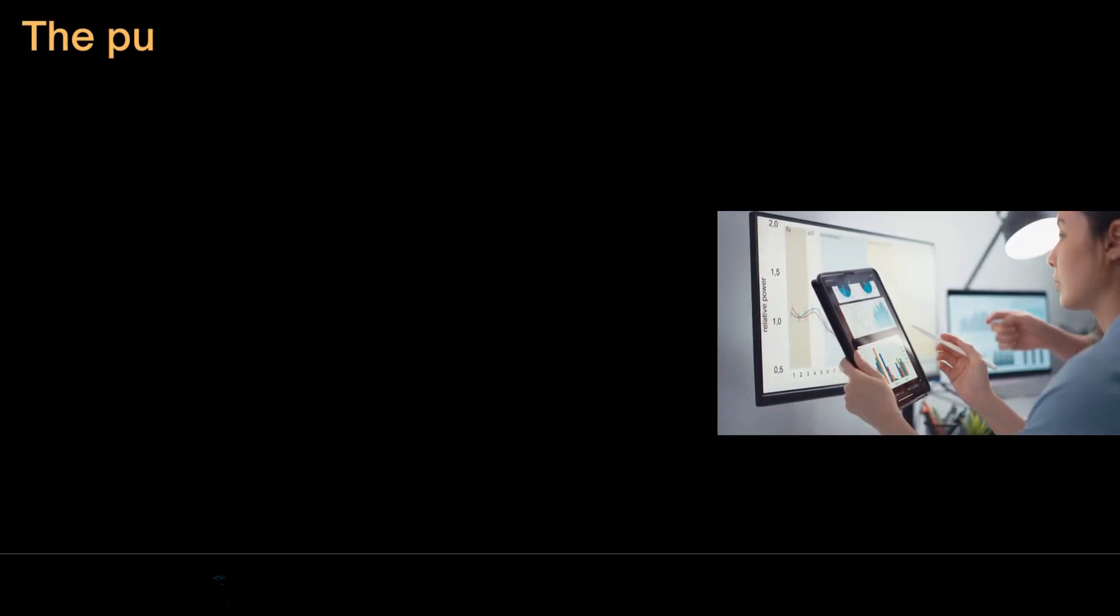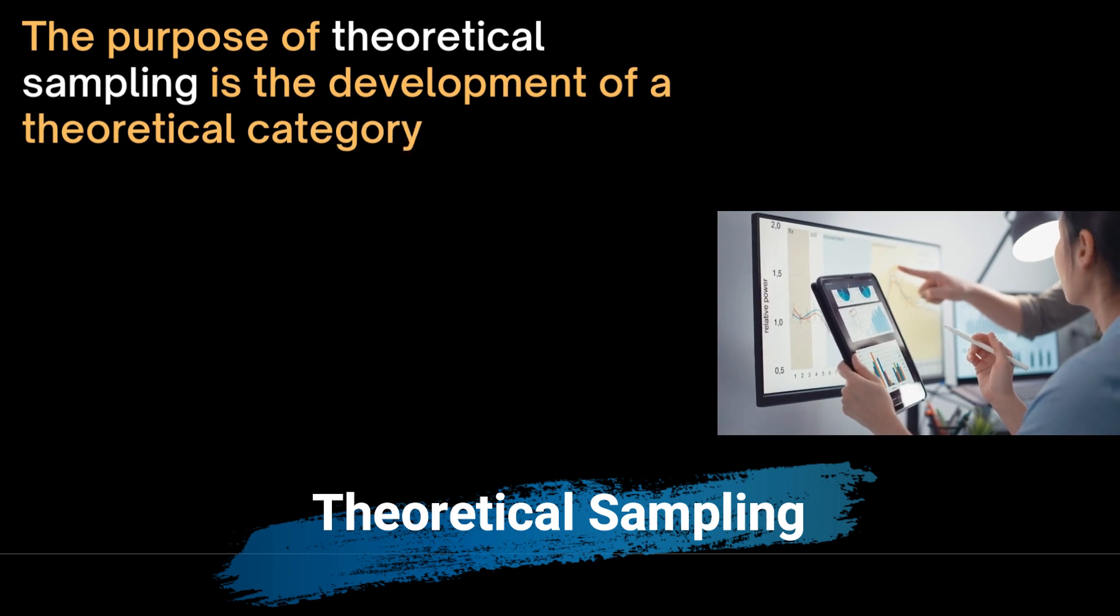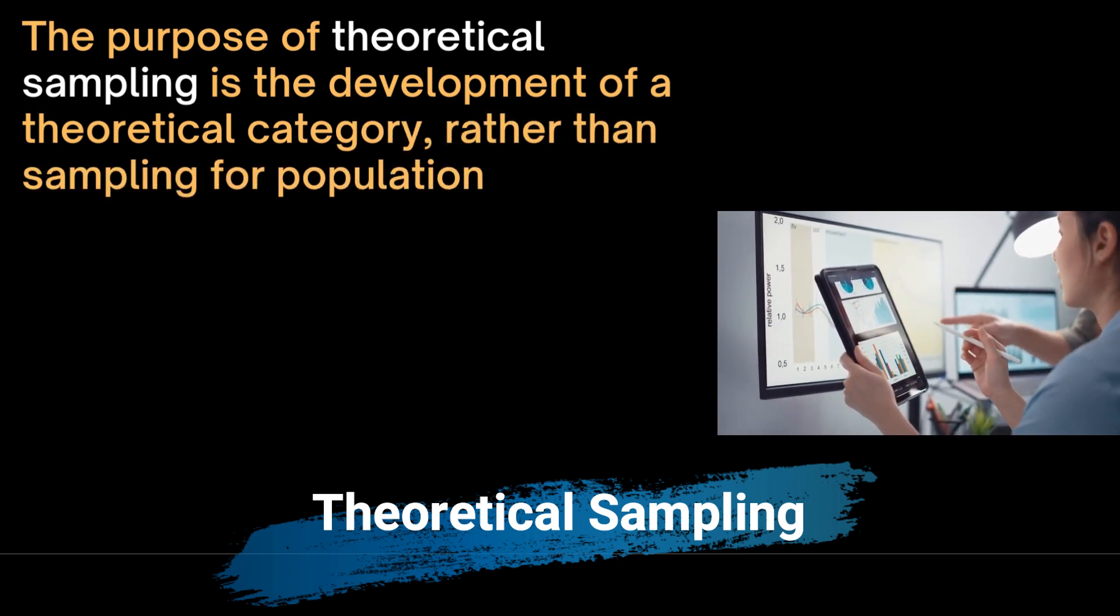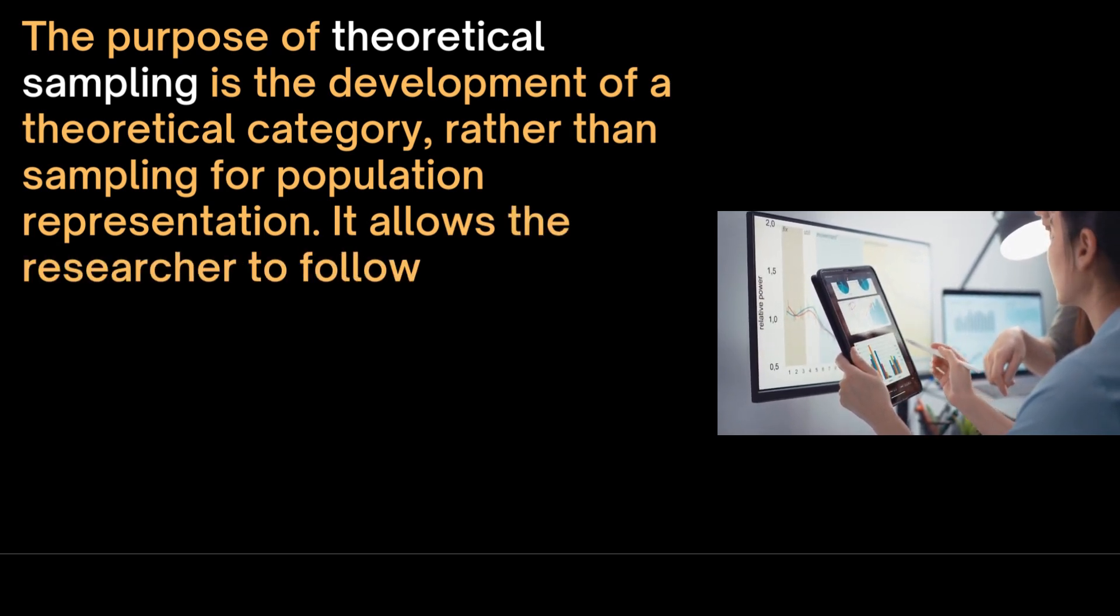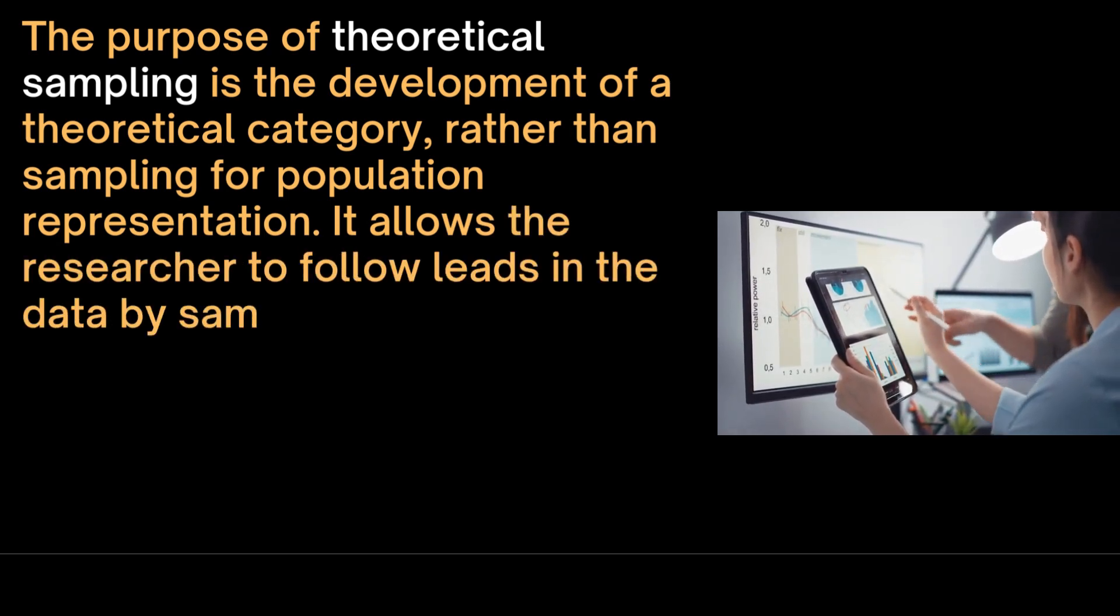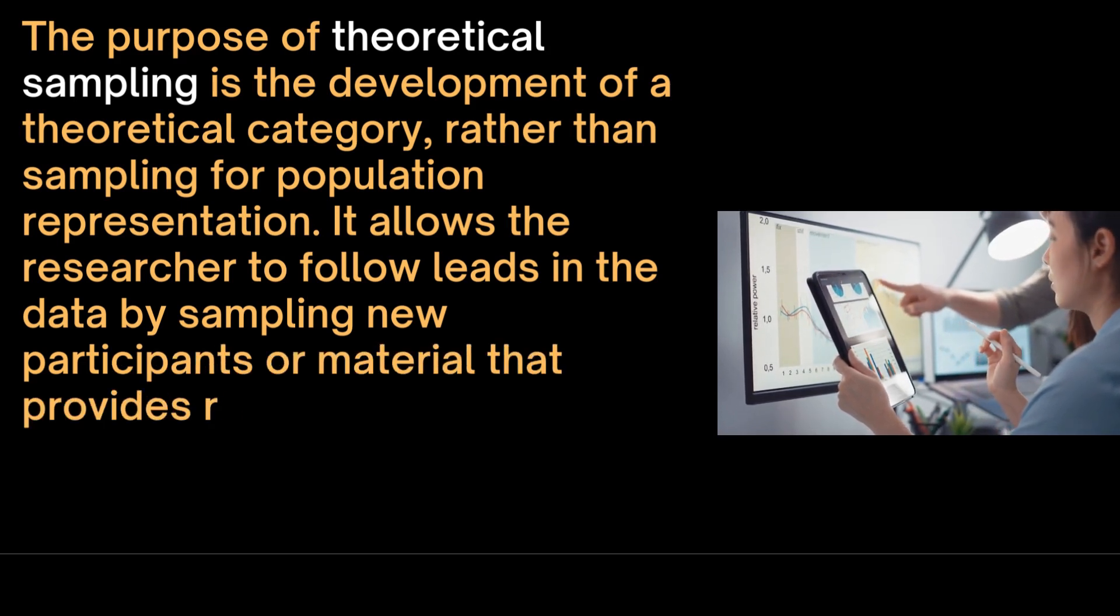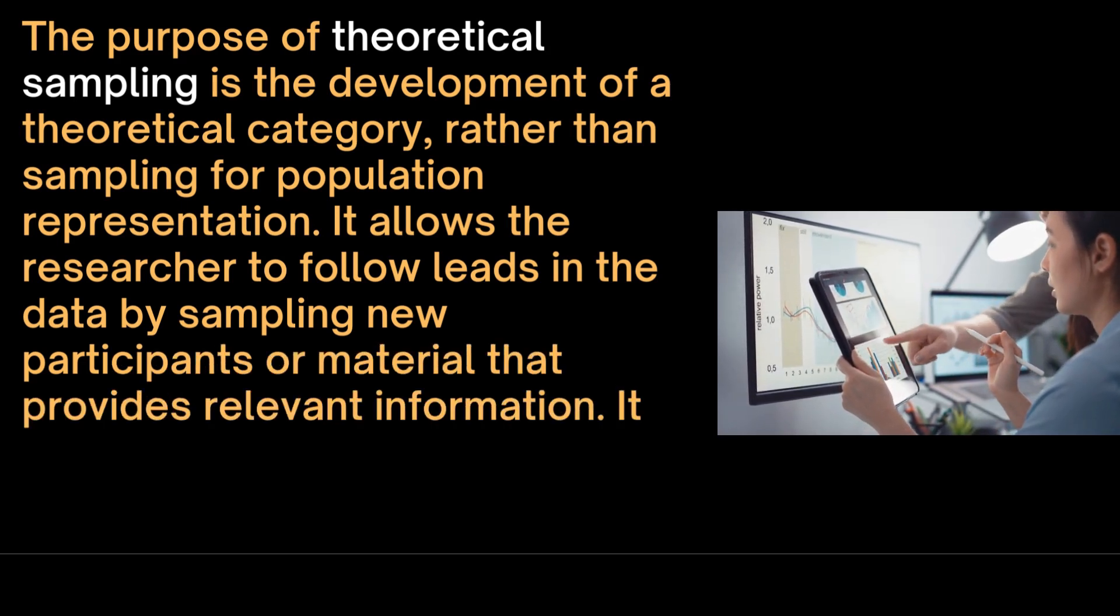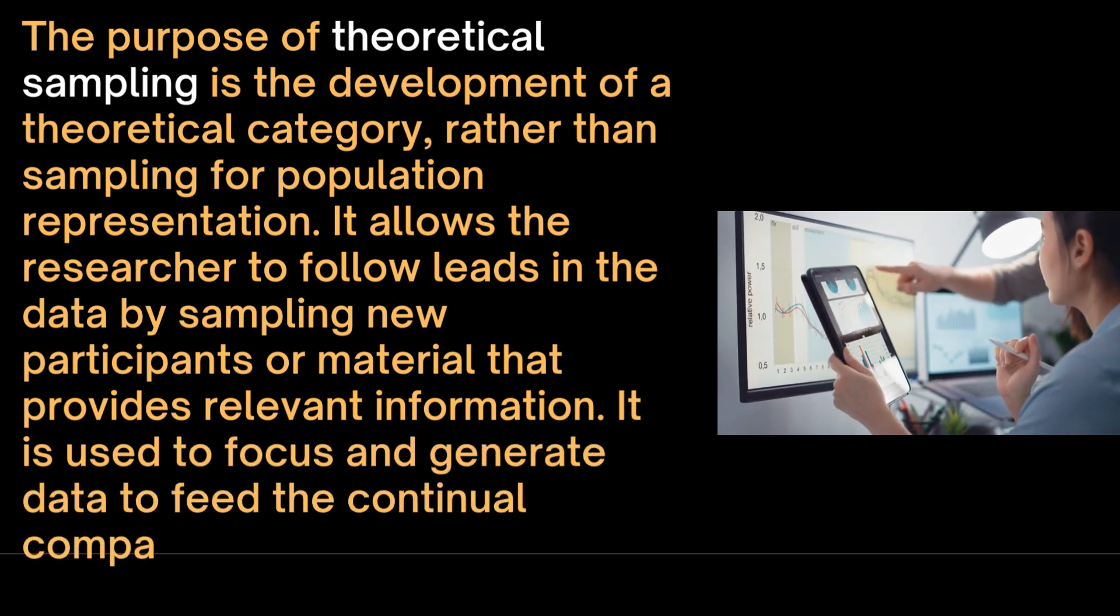The purpose of theoretical sampling is the development of a theoretical category which is different from sampling for population representation. It allows the researcher to follow leads in the data by sampling new participants or material that provides relevant information. This is used to focus and generate data to feed the continual comparative analysis of the data.